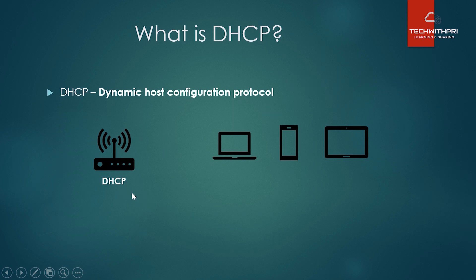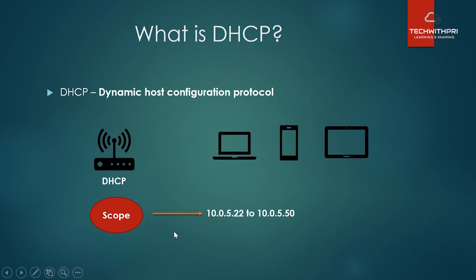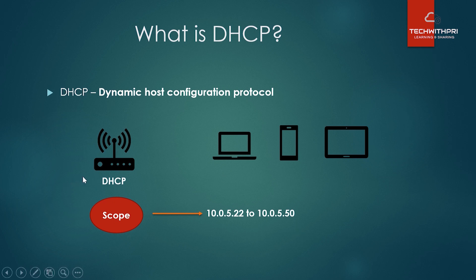Now the question is: from where does DHCP get the IP addresses to assign? The answer is a 'scope' — an address pool or range. For example, if the scope is 10.0.5.22 to 10.0.5.50, DHCP will only assign addresses within that range. So if three devices connect, they might receive 10.0.5.22, 10.0.5.23, and 10.0.5.24 respectively.